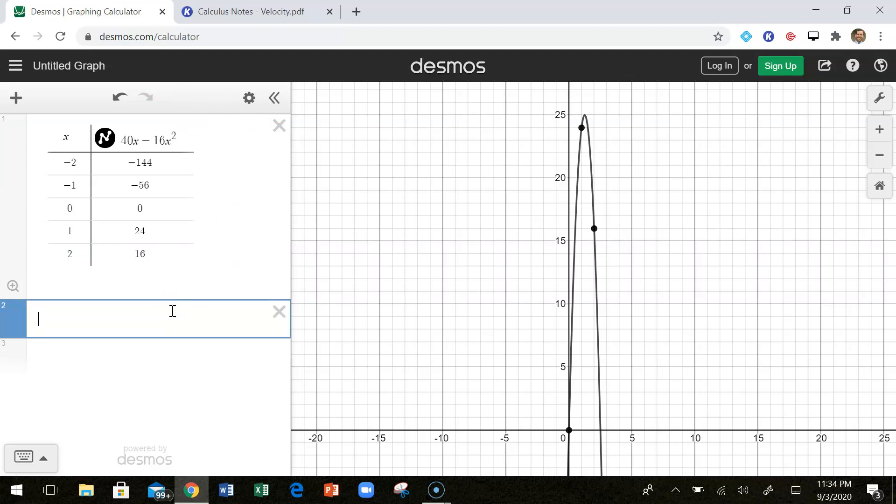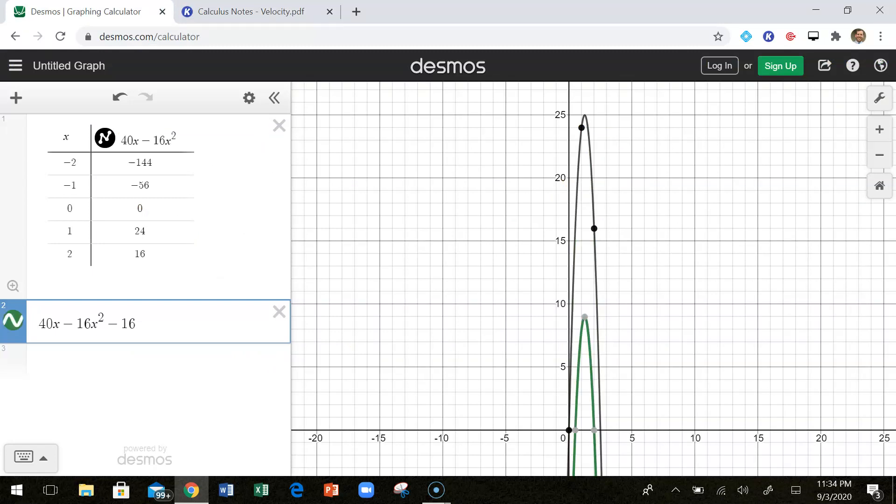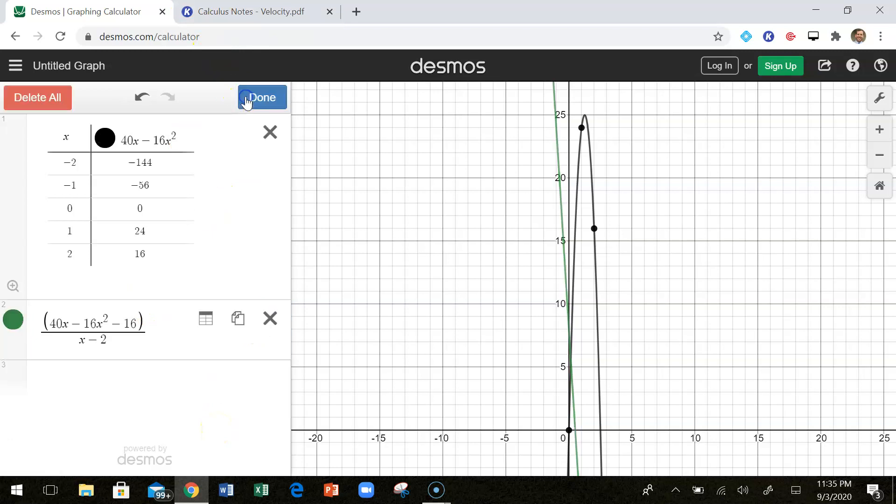So what I'm going to do is on top, we're going to have the function, which is going to be 40x minus 16x squared. And then minus, so that's going to be like, that's my function for no matter what x I plug in, I'm doing that minus 16. Every time on top, it's going to be minus the y value at 2, which is going to be minus 16. So I'm plugging in the slope formula here, but that's the top. And then we're going to divide by whatever x we're plugging in minus 2. And I'm going to pull up a table here.